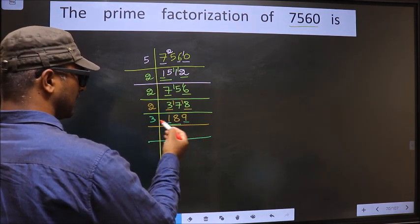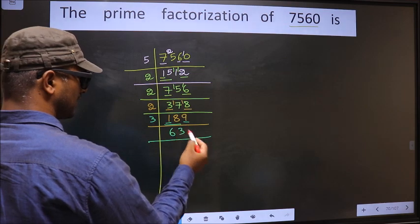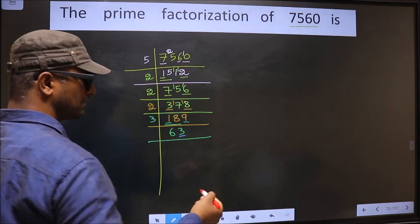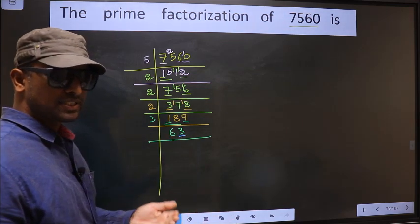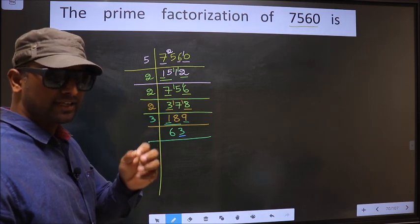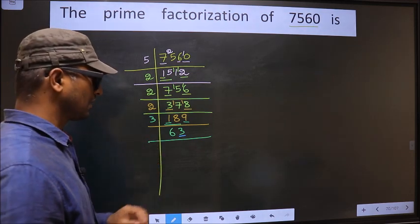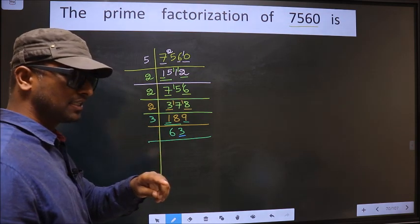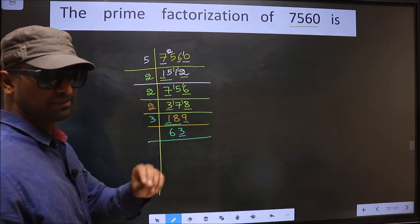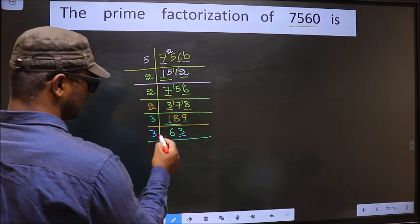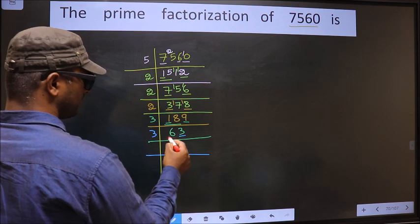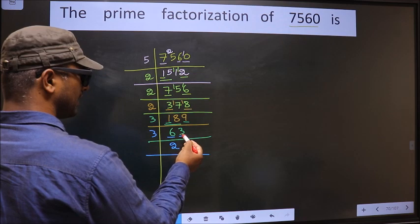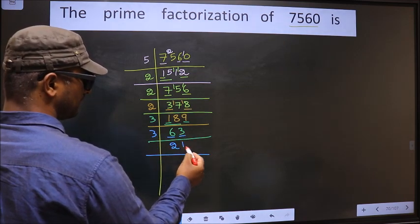The other number 9 — when do we get 9 in the 3 table? 3 threes is 9. For this number the last digit is 3, not even, so this is not divisible by 2. To check divisibility by 3, we add the digits — that is 6 plus 3 is 9. Is 9 divisible by 3? Yes. So this number is also divisible by 3, so we take 3 here. The first number 6 — when do we get 6 in the 3 table? 3 twos 6. The other number 3 — when do we get 3 in the 3 table? 3 ones 3.